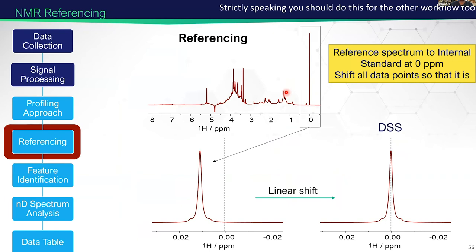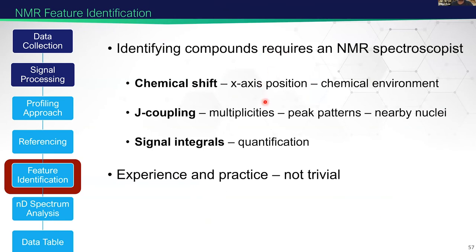When we do profiling or targeted NMR, we need standards and databases, but it's the only way to get identified chemicals and their quantification. One thing we have to do is referencing — like aligning in GC-MS, but just a single point with a linear shift. For various reasons like pH, temperature, and concentration, our chemical shifts or x-axis positions will move in our sample. We reference to an internal standard such as DSS, which we set to exactly zero PPM. We then need to identify our compounds, which requires quite a lot of experience and skill.